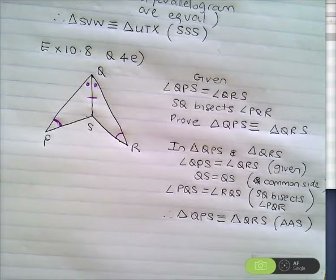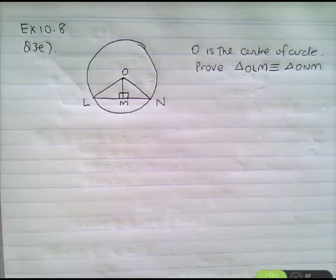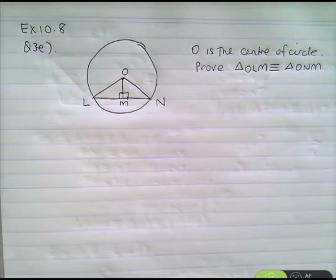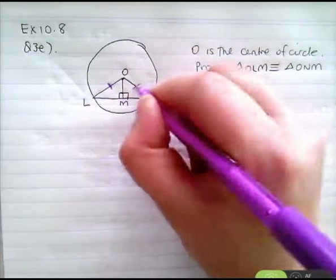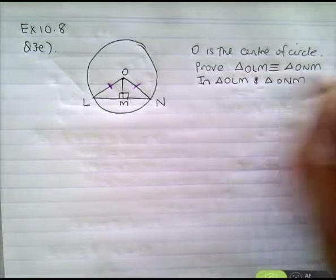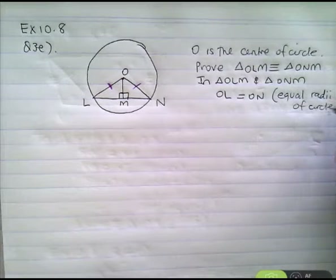Exercise 10.8, question 3E — it's got a circle in it. You're given that O is the centre of the circle, and you have to prove that triangle OLM is congruent to triangle ONM. Any takers? Go, Laura. Because OL equals ON because the radius is... yes, very good. So we can say in triangle OLM and triangle ONM that OL equals ON — equal radii of circle. Just 'equal radii' is good enough.